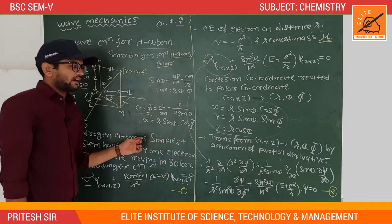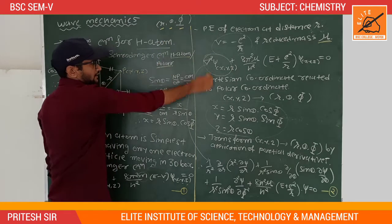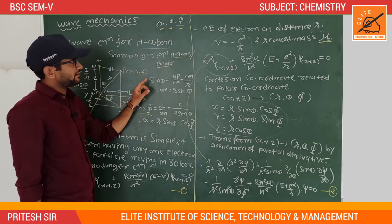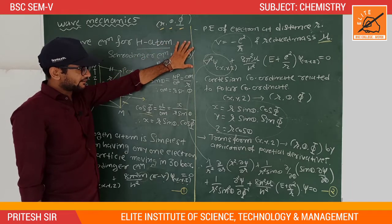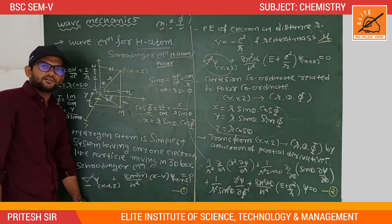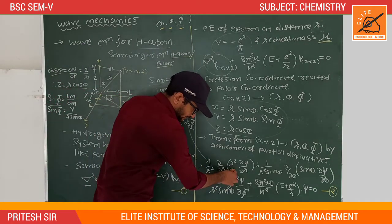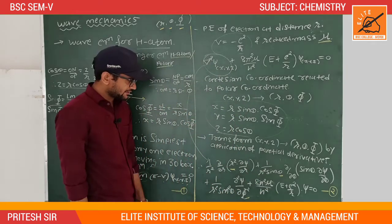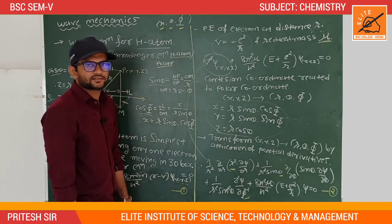In the next lecture, I will separate the three variables r, θ, and phi from this polar-coordinate Schrödinger equation. Thank you for watching this video.